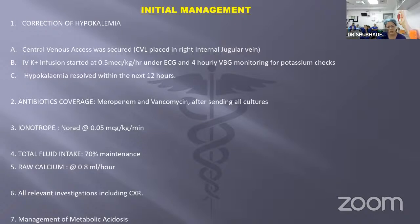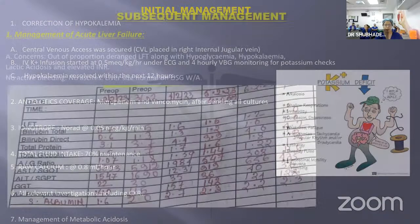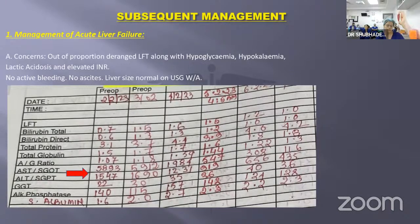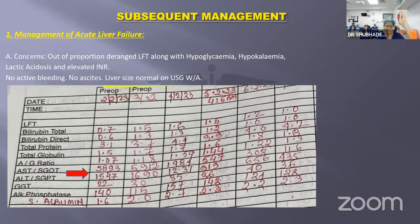Subsequently, we noticed on the next day that liver function was grossly deranged — liver enzymes in the range of 6,000. She had recurrent episodes of hyperglycemia, hyperkalemia, lactic acidosis, and elevated INR, but no active bleeding or acidosis. Liver size was normal on USG.